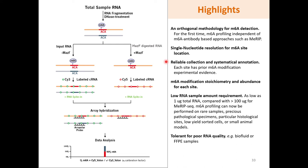Single-nucleotide resolution for M6A site location. Reliable collection and systematic annotation — each site has prior experimental evidence for actual M6A modification. M6A modification stoichiometry and abundance for each site. No high RNA sample amount requirement — as low as 1 microgram of total RNA compared with greater than 100 micrograms for MeRIP sequencing. M6A profiling can now be performed on rare samples, precious pathological specimens, precise histological sites, low-yield sorted cells, or small animal models. It is also more tolerant for poor RNA quality, for example, biofluid or FFPE samples.